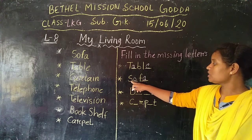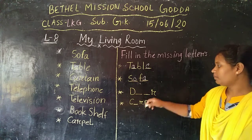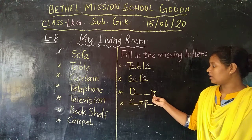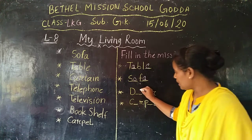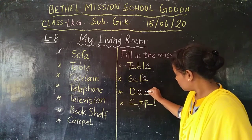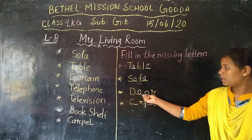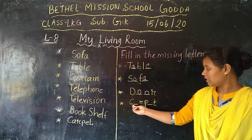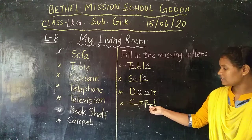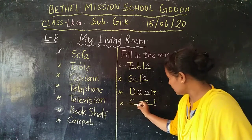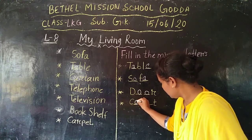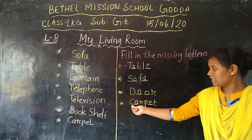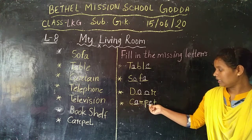Now it is sofa: S-O-F-A, sofa. Next, D-dash-dash-R — the missing letters are double O — so D-O-O-R, door. Next, C-dash-R-P-dash-T — the missing letters are A and E — that means it is carpet: C-A-R-P-E-T, carpet.